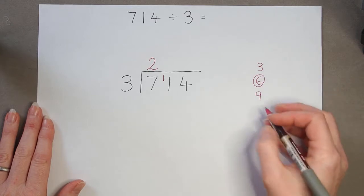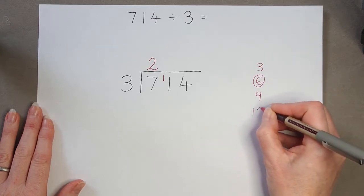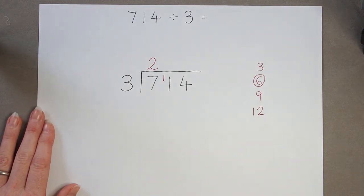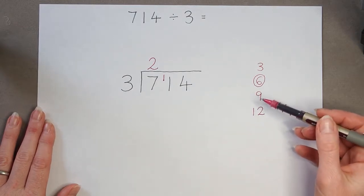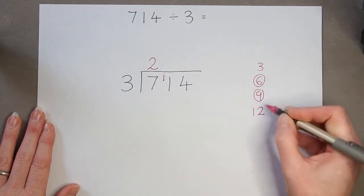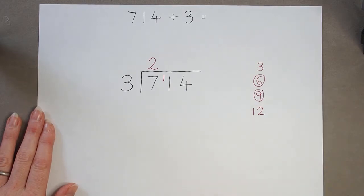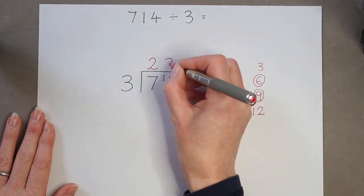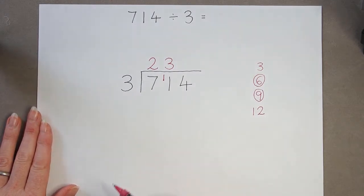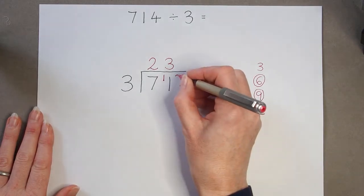So 11 divided by 3. If I keep my multiples of 3 going, my next multiple would be 12. So again I can see 11 isn't in my 3 times table. It doesn't go exactly. So how many 3s are there in 11? Now the closest I can get is 9. So that's 3 times 3 is 9. And because I had 11, that means I've got 2 left over. If I count on from 9, 10, 11, that's a remainder of 2.